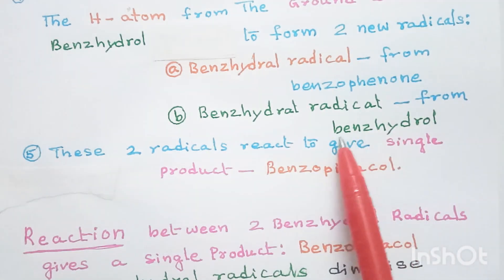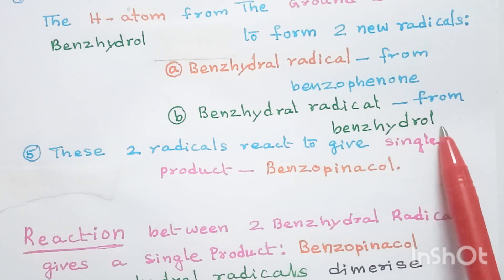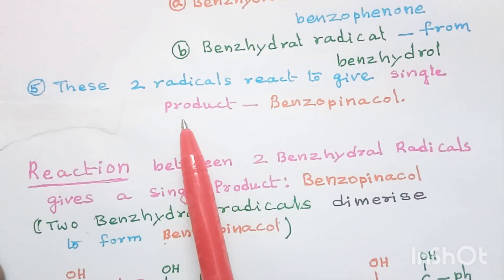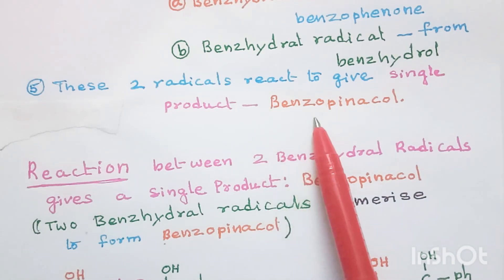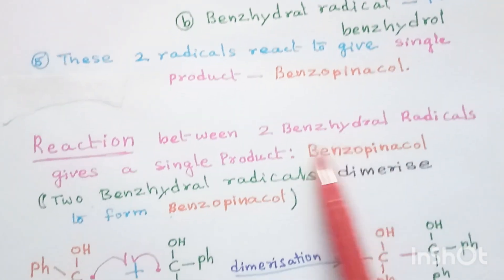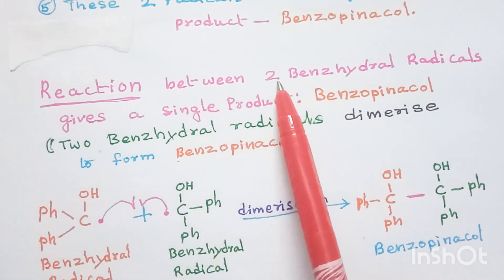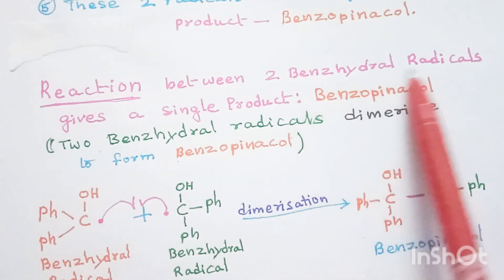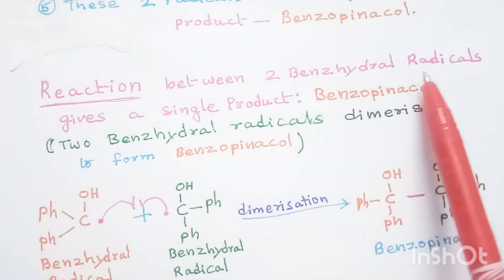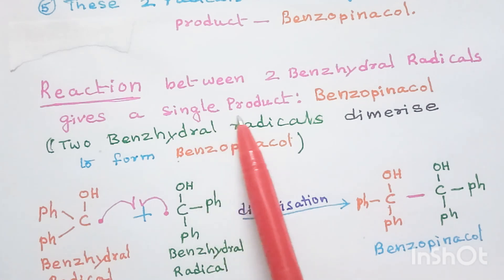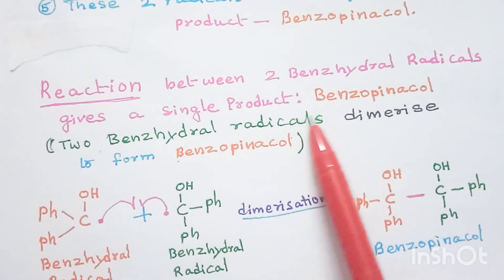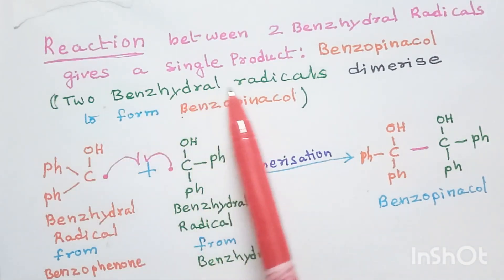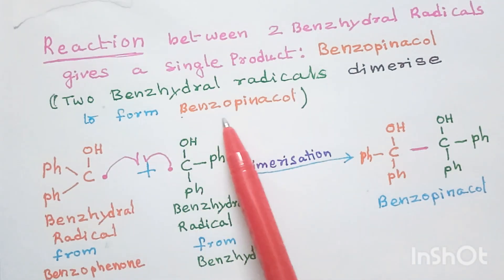These two benzhydrol radicals — one from benzophenone and another benzhydrol radical from benzhydrol, which is the hydrogen donor — react together. The dimerization or combination of these two benzhydrol radicals gives us a single product, that is benzopinacol.